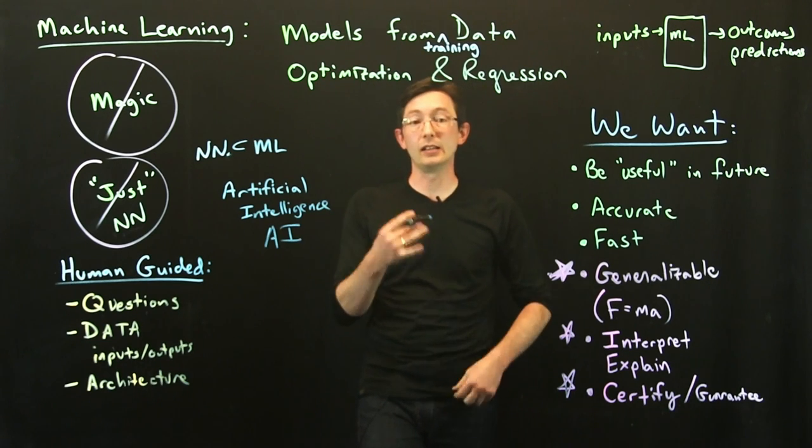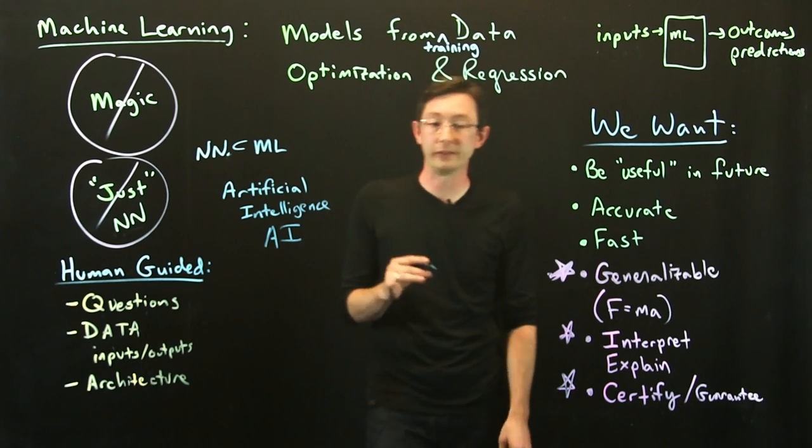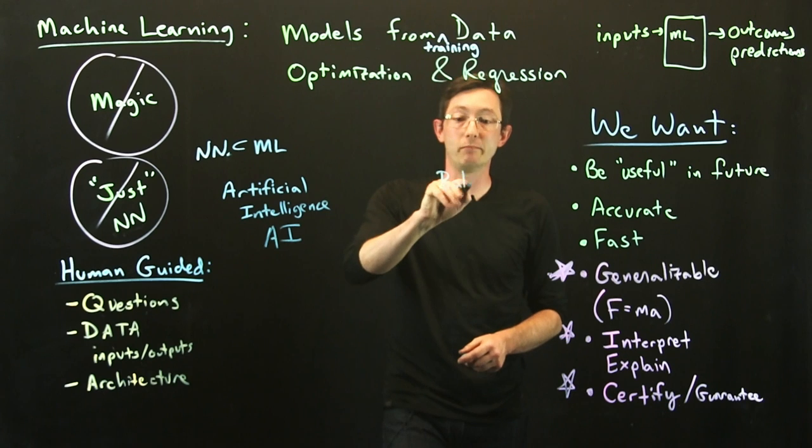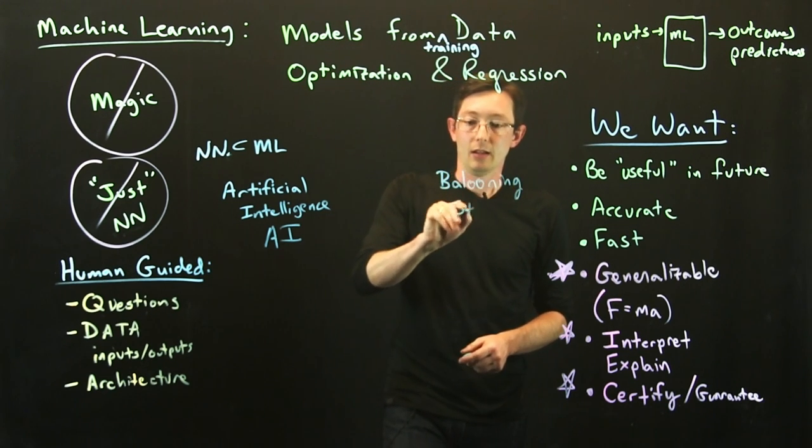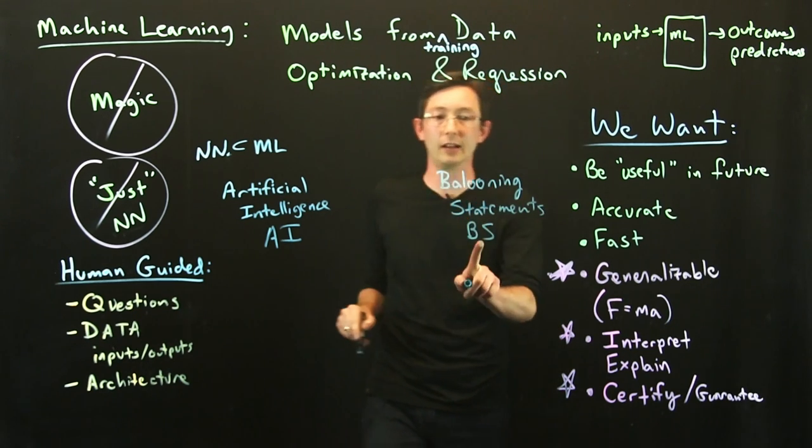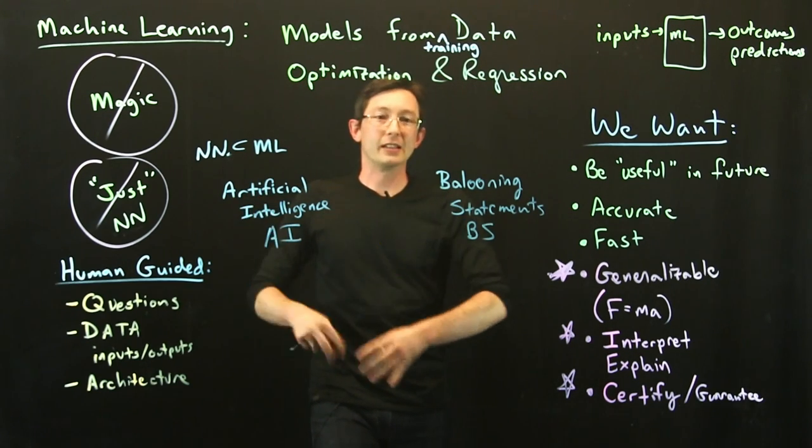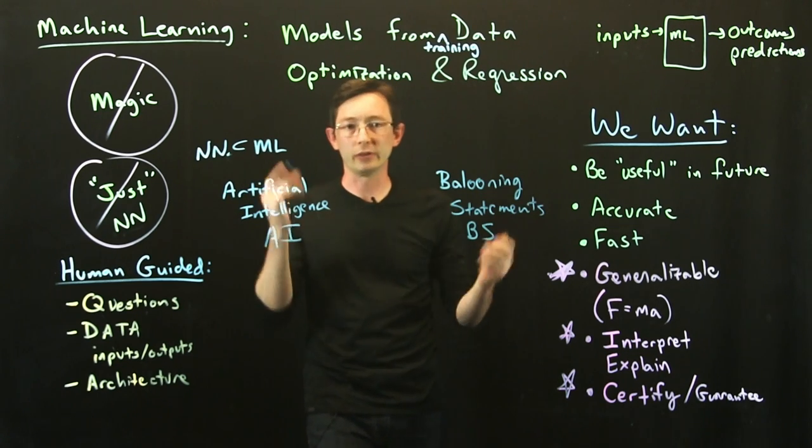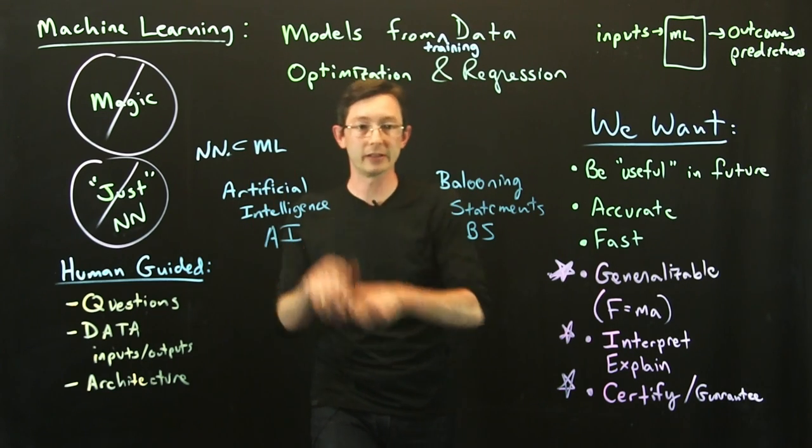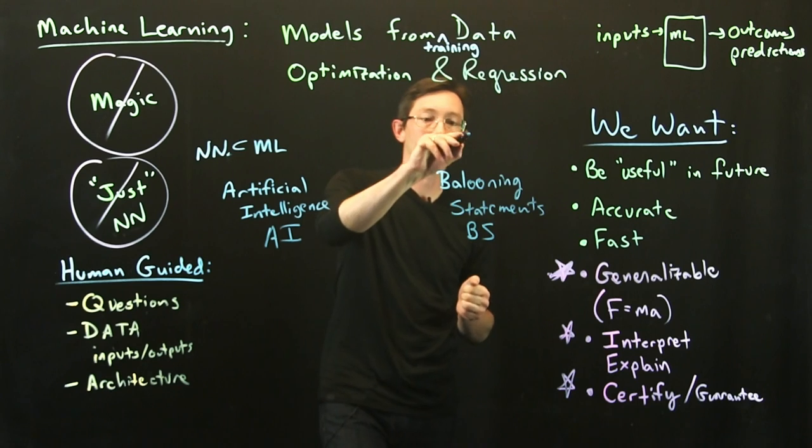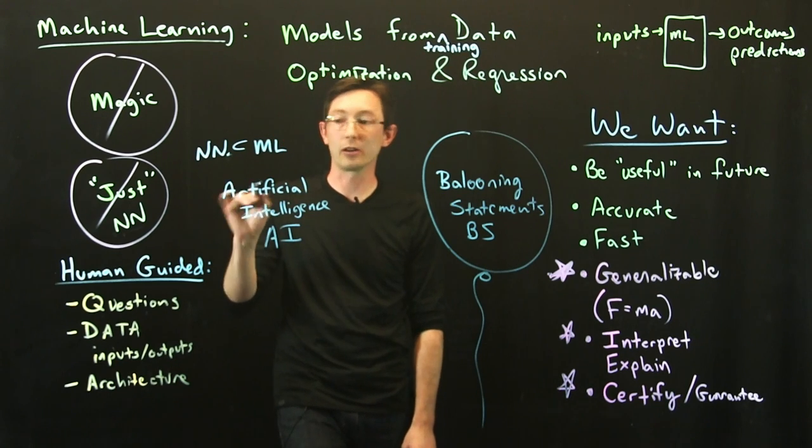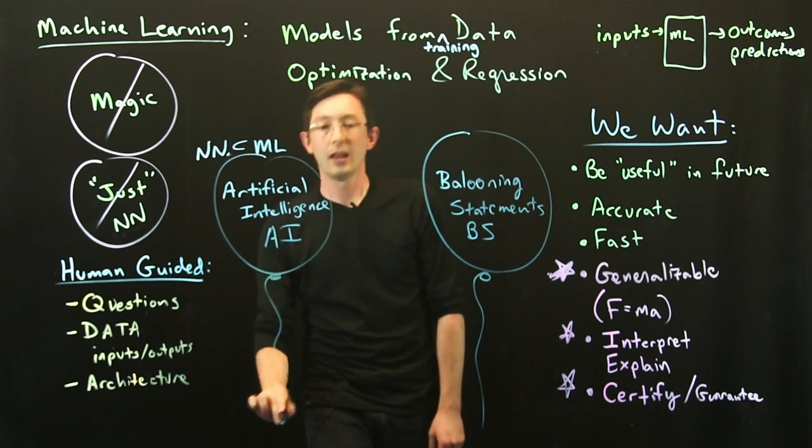But I also want to point out that at least in lots of fields, in both popular and technical fields, there's what I'll call a lot of ballooning statements about AI. So people are using this word, this buzzword to be a catchall for everything they're going to do to solve world hunger and everything in the world is going to be solved because of artificial intelligence. And I think there are a lot of ballooning statements, these kind of ballooned statements that people make about how big artificial intelligence is and how close we are and what the capabilities are.